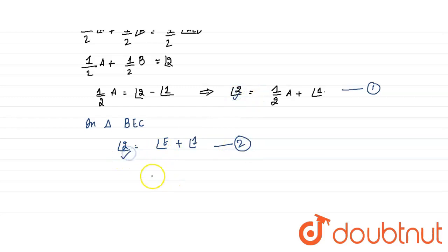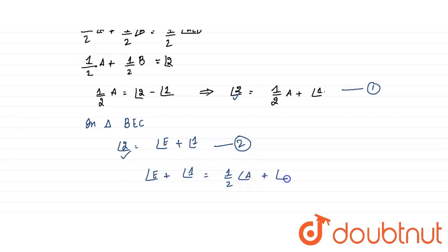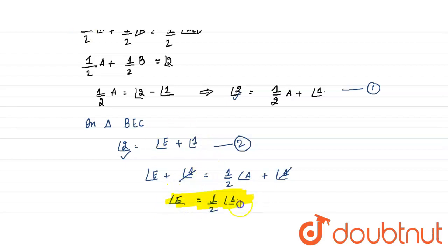Both equations are equal to angle 2, so angle E plus angle 1 equals half angle A plus angle 1. Cancelling angle 1 from both sides, we get angle E equals half of angle A. Hence proved.